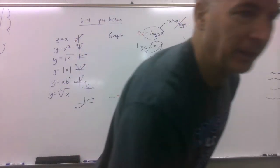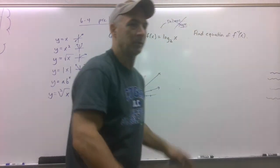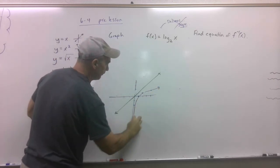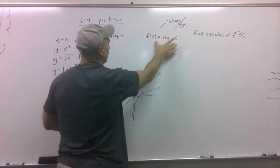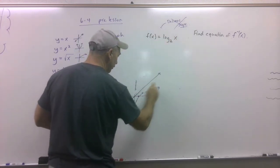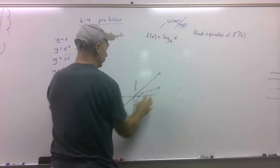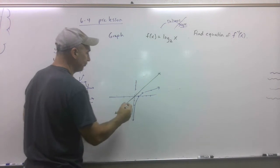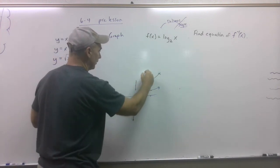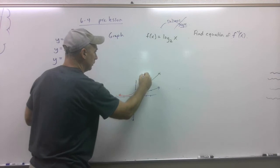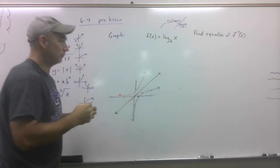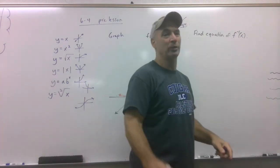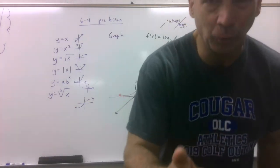So remember that the purple curve here — the exponential — is your generic parent function for exponential graphs, and the red one is the parent function for log graphs. Lock both of those in. Now they're going to ask us to actually find the equation of the inverse function. Make sure you go right to part two of this pre-lesson for that.